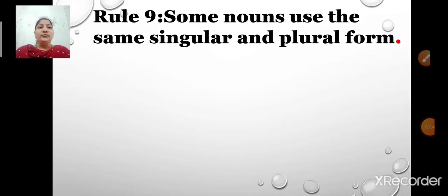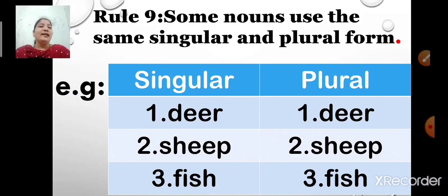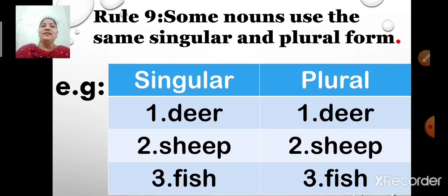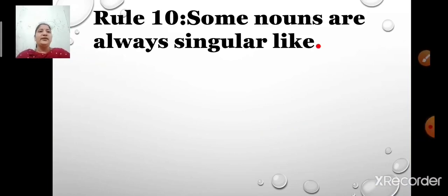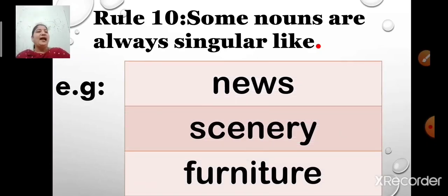Rule number 9: some nouns use the same singular and plural form. For example, deer remains deer, sheep remains sheep, and fish remains fish — the spellings do not change. Some nouns do not change at all when they are in plural form. Rule number 10: some nouns are always singular, like news, scenery and furniture.